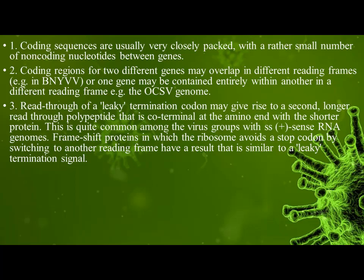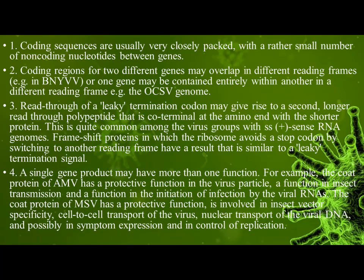Fourth, a single gene product may have more than one function. For example, the coat protein of AMV has a protective function in the virus particle, a function in insect transmission, and a function in the initiation of infection by the viral RNAs. The coat protein of MSV has a protective function, is involved in insect vector specificity, cell-to-cell transport of the virus, nuclear transport of the viral DNA, and possibly symptom expression and control of replication.